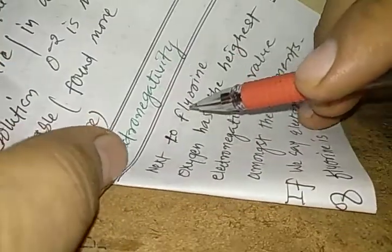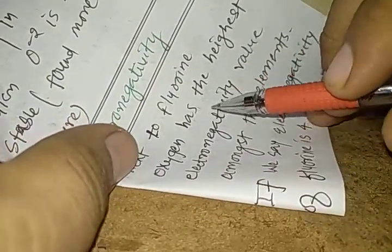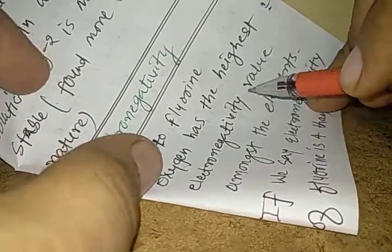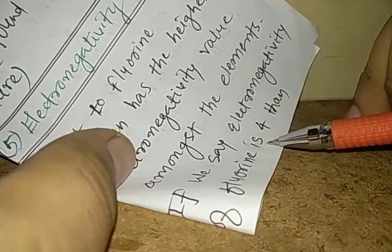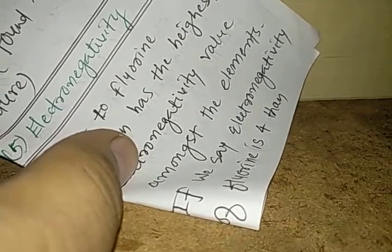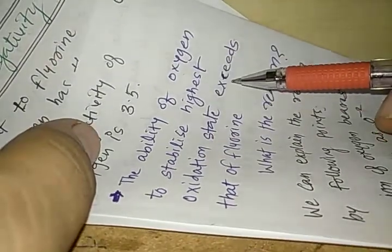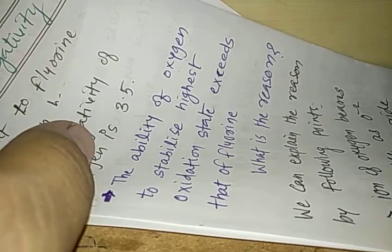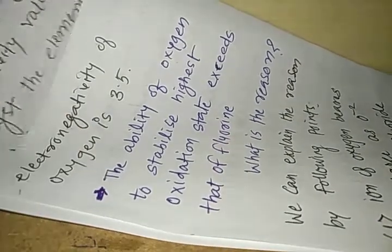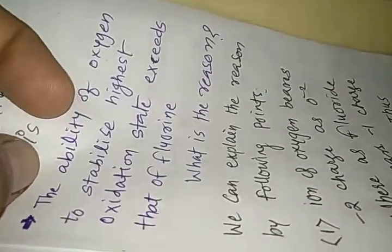Now we should understand about the electronegativity of Group 16 elements. Next to fluorine, oxygen has the highest electronegativity value among the elements — if the electronegativity of fluorine is 4, then the electronegativity of oxygen is 3.5. The ability of oxygen to stabilize the highest oxidation state exceeds that of fluorine. What is the reason for this?